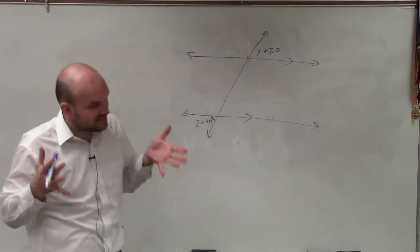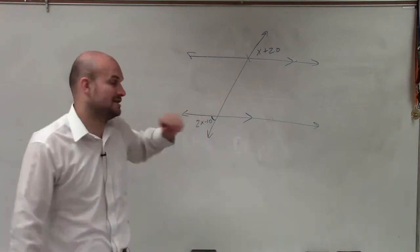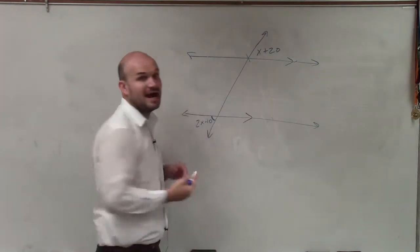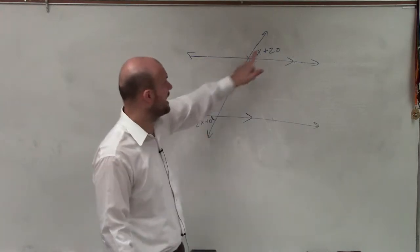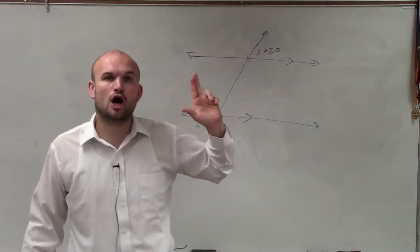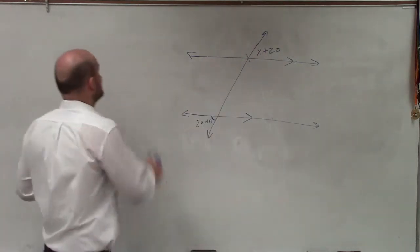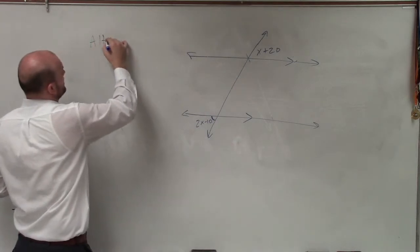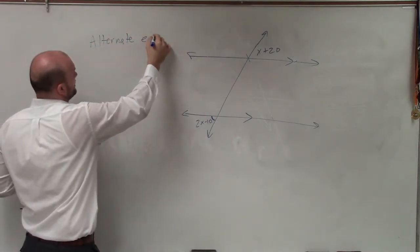So now I'm just going to focus on these parallel lines and this transversal. And I noticed from the parallel lines that these two angles are exterior angles, as well as they're on opposite sides of the transversal or alternating sides. So therefore, I'm going to label these as alternate exterior angles.